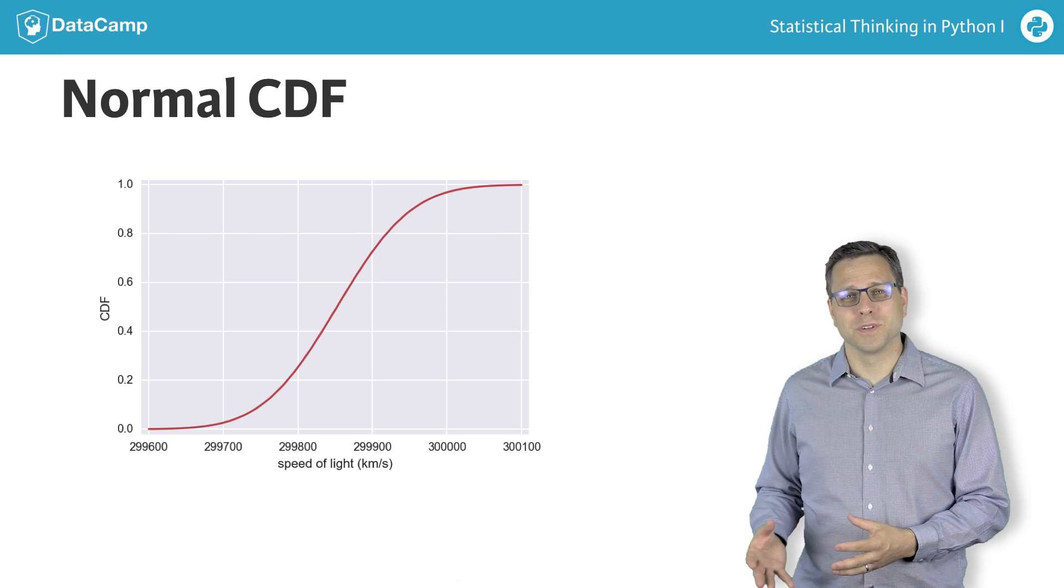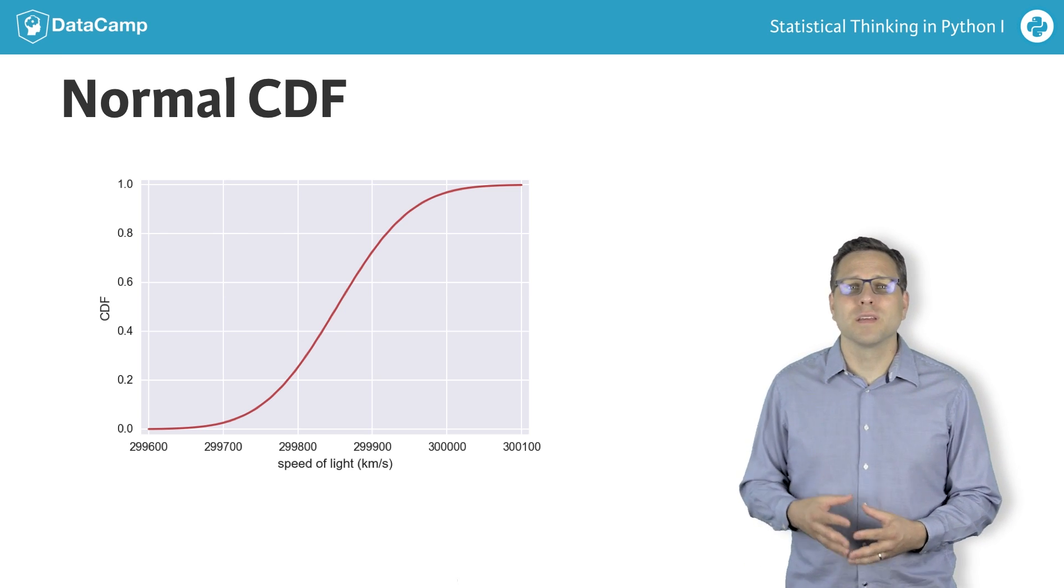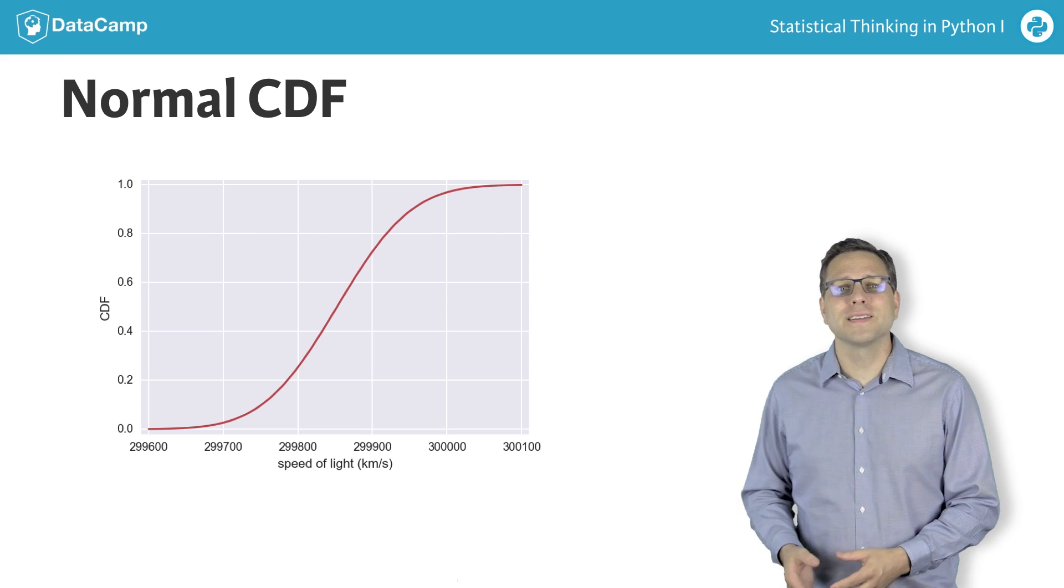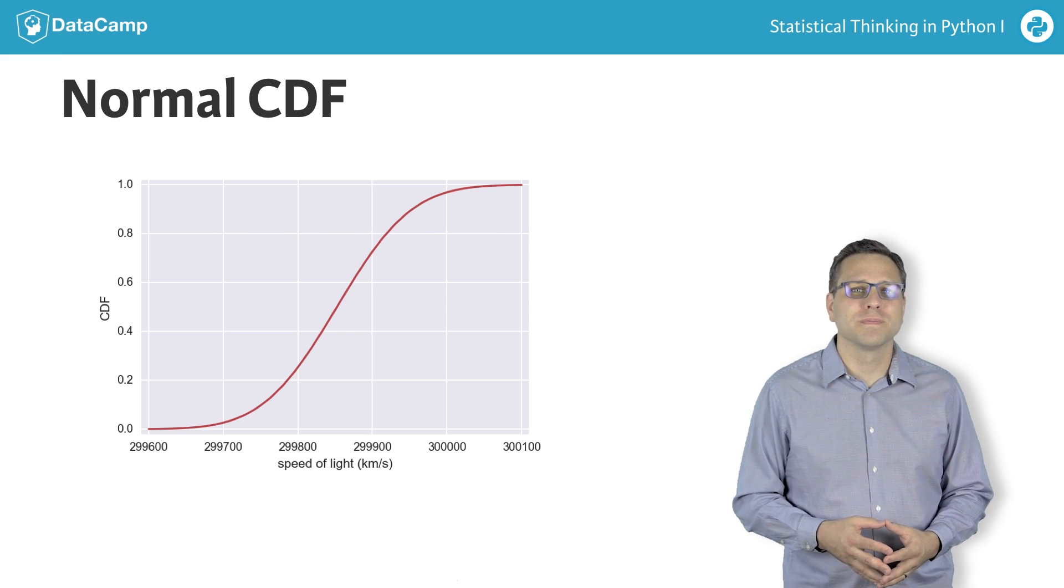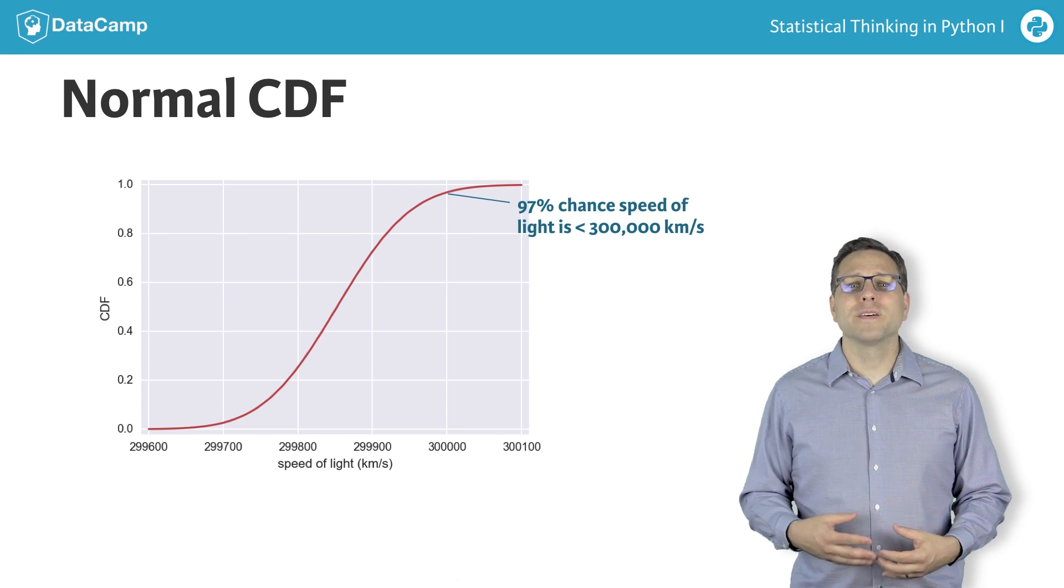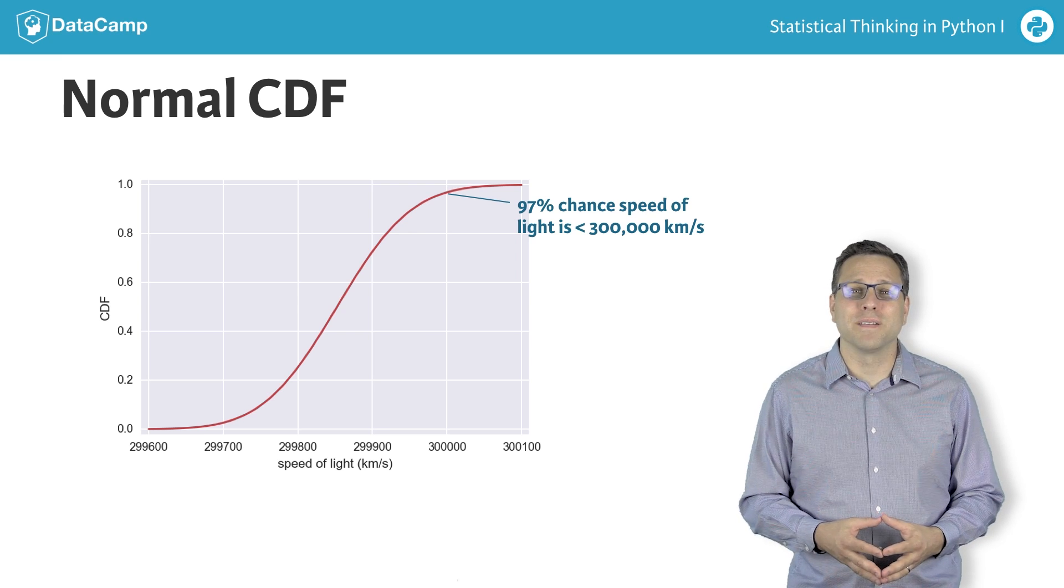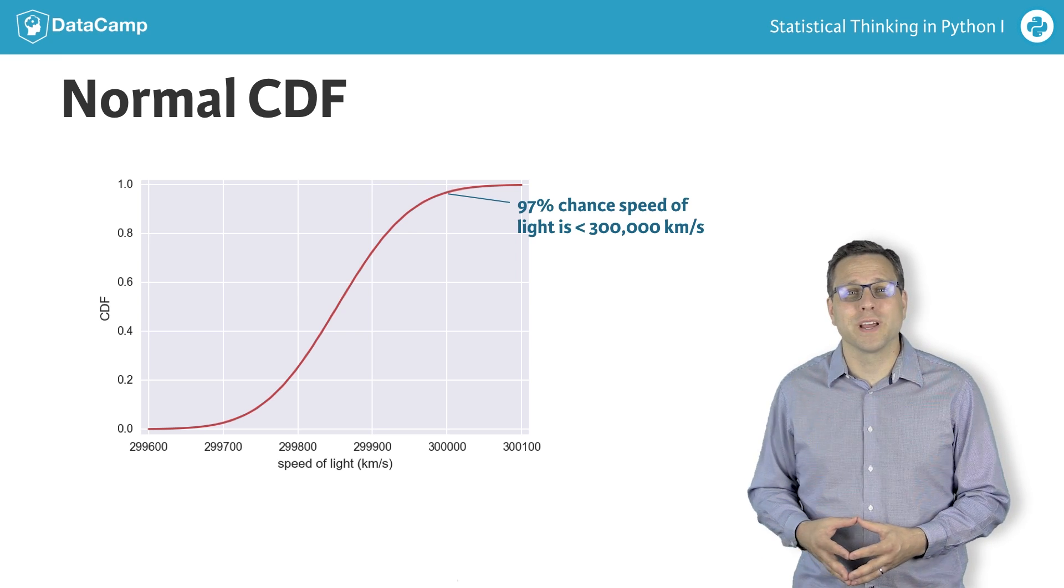Here is the CDF of the normal distribution. Remember that the CDF gives the probability the measured speed of light will be less than the value on the x-axis. So reading off the value at 300,000 kilometers per second, we see that there is a 97% chance that a speed of light measurement is less than that. So there is about a 3% chance that it is greater.